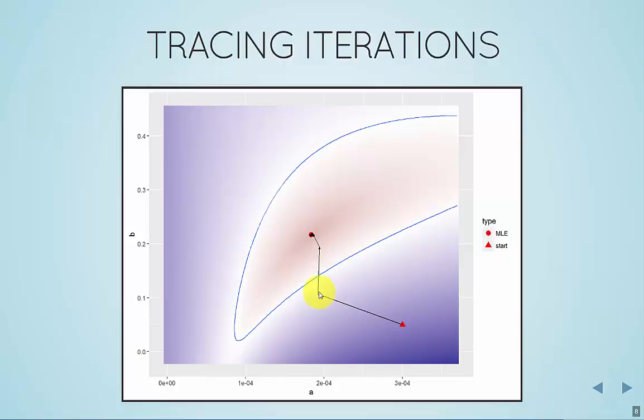So it steps from here to here, then takes aim again, then again, and so on until it finds a good value, the best value, the flattest part of the likelihood surface.